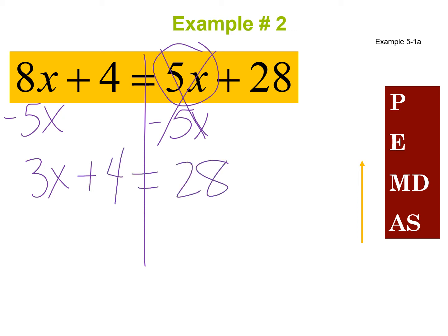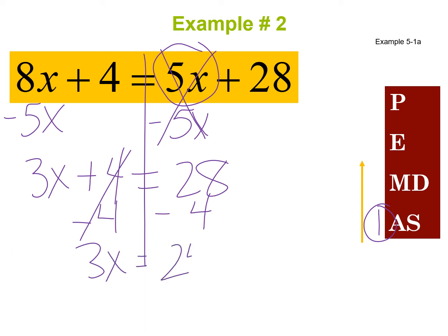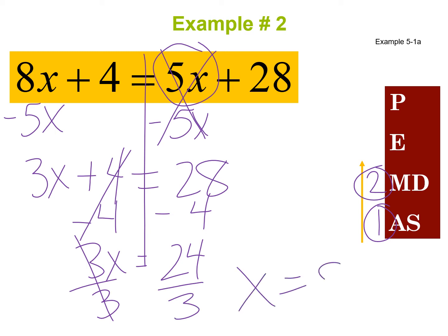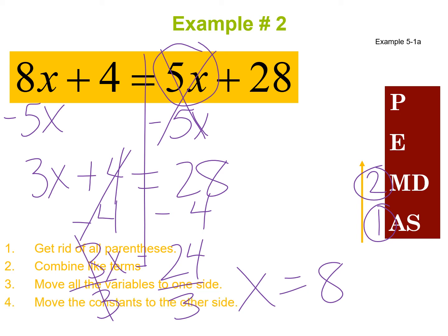This looks like the two-step equations we've done before. First, undo adding or subtracting — subtract 4 from both sides — giving 3x equals 24. Then undo multiplying or dividing — divide both sides by 3 — and I get x equals 8. There were no parentheses, no like terms to combine, but I moved variables to one side, numbers to the other, and solved.